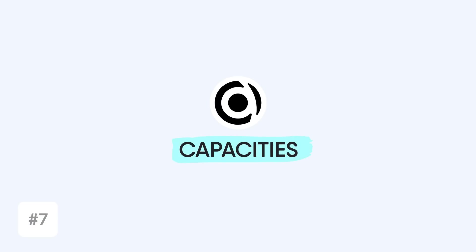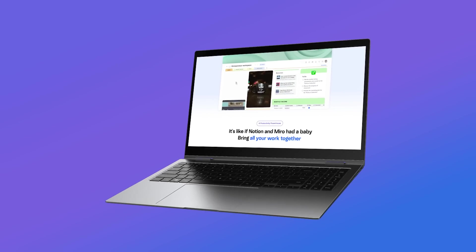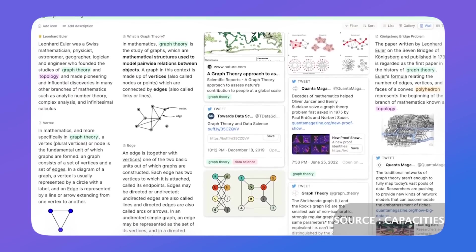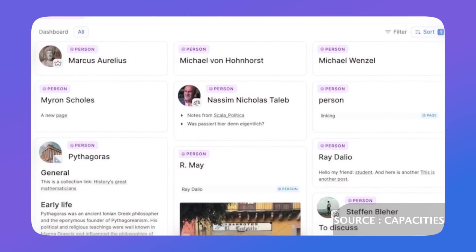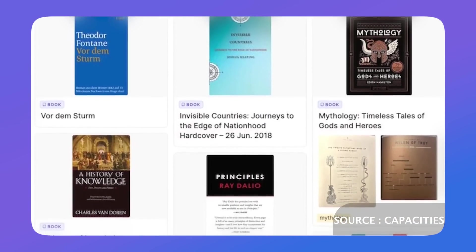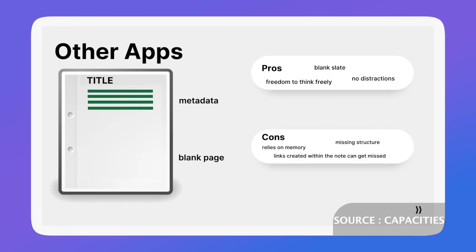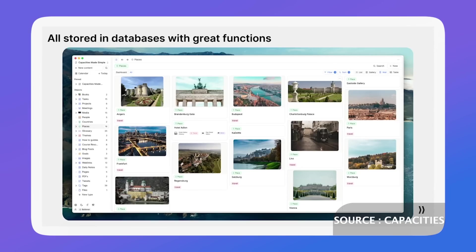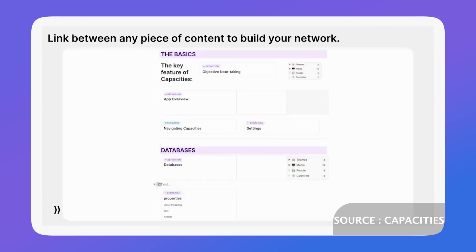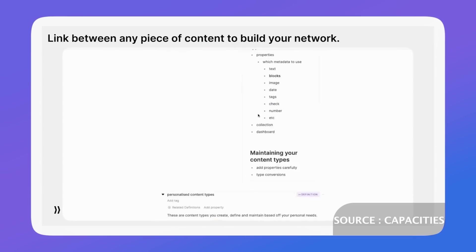Next up is Capacities. Similar to Mem, it has some artificial intelligence features locked under premium, but Capacities approaches things differently using object-based note taking. Many people in the Second Brain community will like this, as it structures the way you take your notes — not only in a template, but in a refined format that helps you come back to things. For example, if you had a conversation about a podcast, you could save both the podcast and the person and link those two together, helping you create a real-life graph of your everyday interactions. Capacities is a really attractive PKM alternative to Notion — same look and feel — but with powerful PKM management abilities.